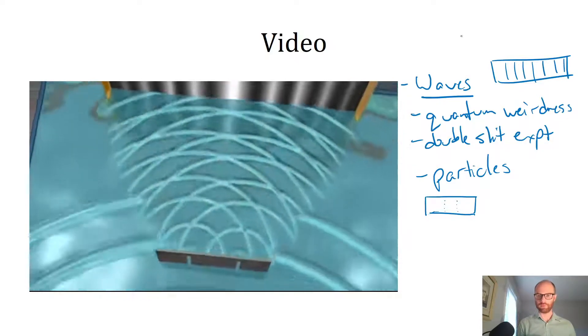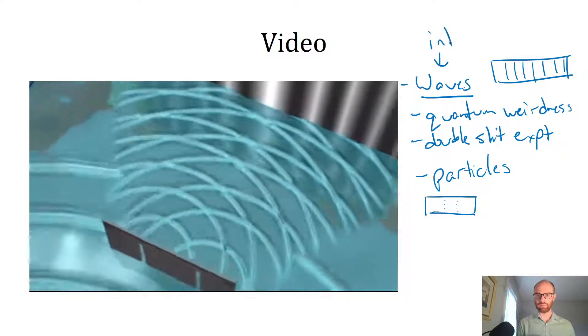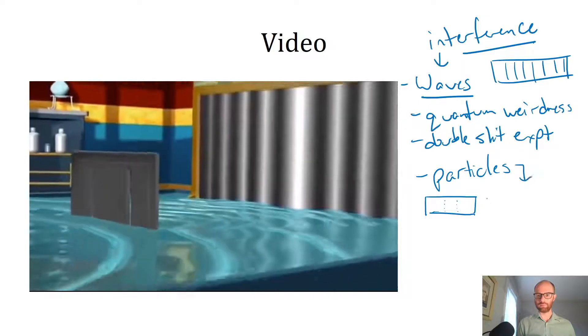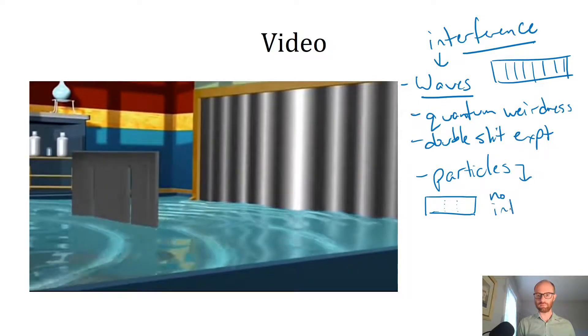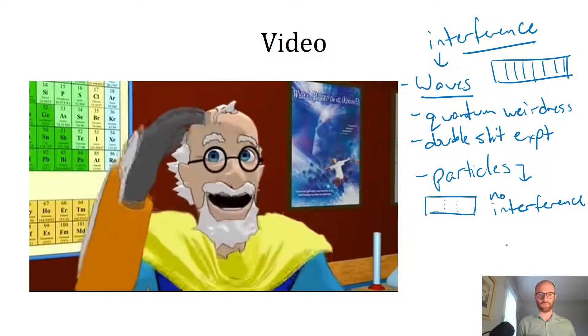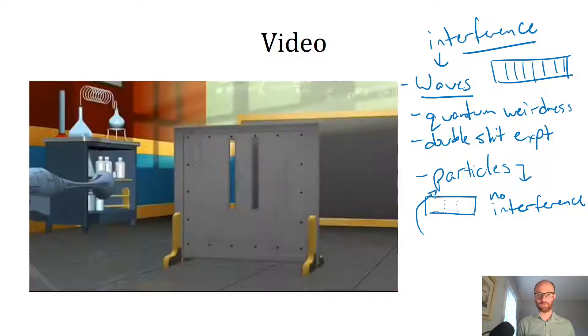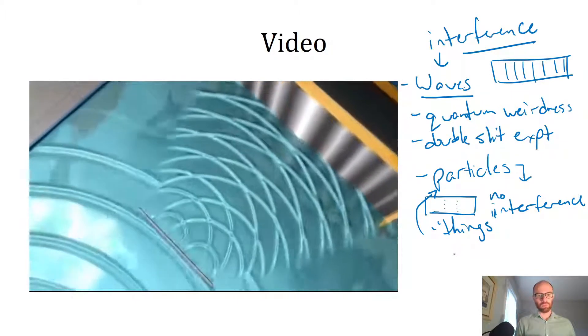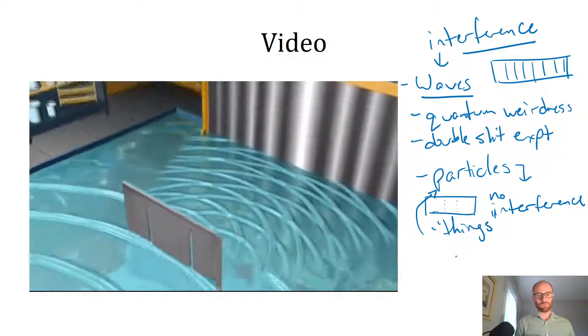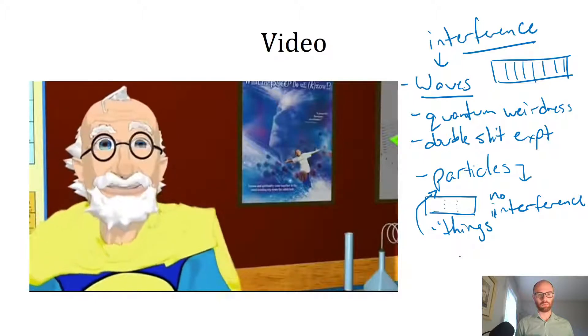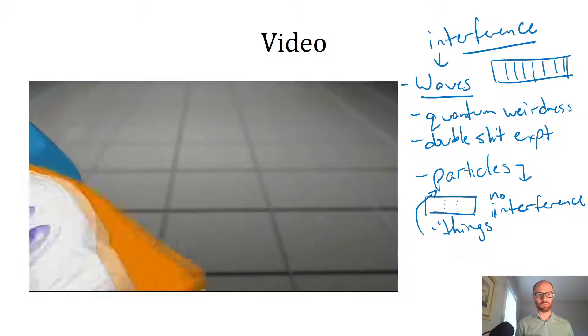Places where the two tops meet are the highest intensity, the bright lines, and where they cancel there is nothing. So when we throw things, that is matter, through two slits, we get two bands of hits. And with waves, we get an interference pattern of many bands. Good so far. Now let's go quantum.